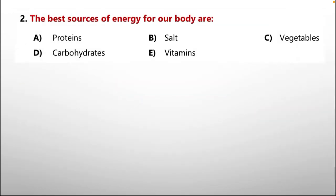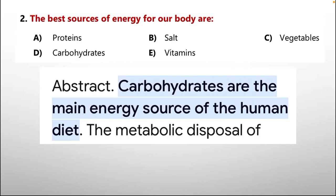Question 2: The best sources of energy for our body are — options include A: proteins, B: salt, C: vegetables, D: carbohydrates, E: vitamins. Carbohydrates are the main energy source of the human body. According to that reasoning, option D is correct — that is, carbohydrates.